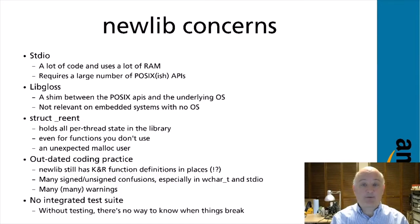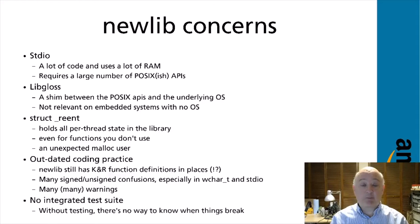One other huge consumer of RAM in newlib is struct reent. This structure holds all per-thread state for the entire library. Replacing this with modern thread local storage techniques would free up a lot of memory while still allowing applications to take advantage of library APIs which need persistent state. Newlib is an old code base extending back to the pre-ANSI era of compilers. It's been a long time since I defined a new API with a bare int type — we now know it's best to use a more specific type that won't surprise you with overflow issues. At a minimum, the library should compile cleanly with -Wextra flags. An extensive and automated test suite is table stakes for a project of this size.